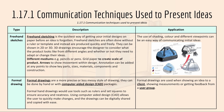An application could be the use of shading and colour, and different viewpoints can be an easy way of communicating an initial design idea. Then we have formal drawing. Formal drawings are a more precise, less messy style of drawing. They can be done by hand or with CAD — computer-aided design — packages. Formal hand drawings use tools such as rulers and set squares to ensure accuracy and neatness. Using CAD software allows the user to quickly make changes, and drawings can be digitally shared and copied with ease. Formal drawings are used when showing an idea to a customer, showing measurements, or getting feedback from a user group.